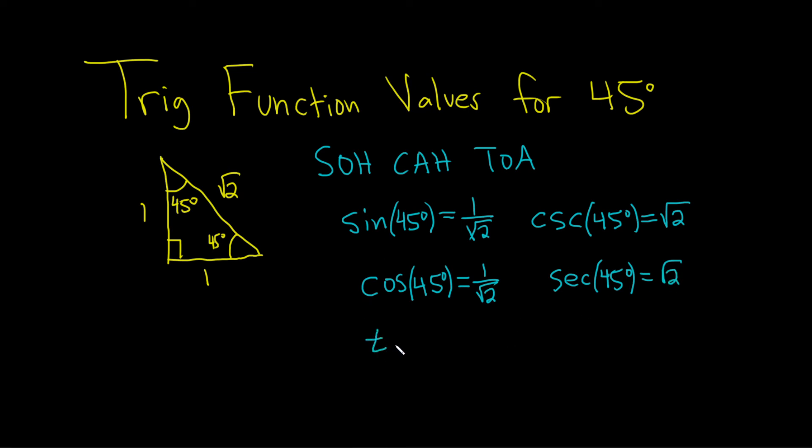What about tangent of 45 degrees? Tangent is opposite over adjacent. The opposite is 1, the adjacent is 1, so you get 1 over 1, which is 1.